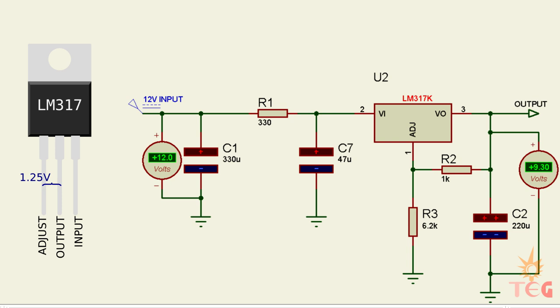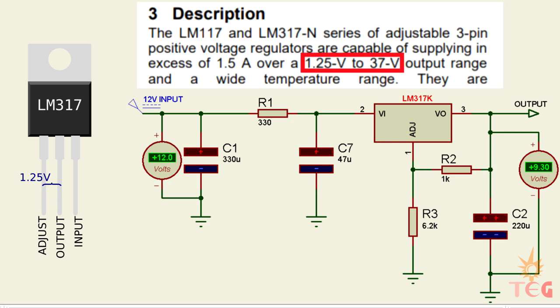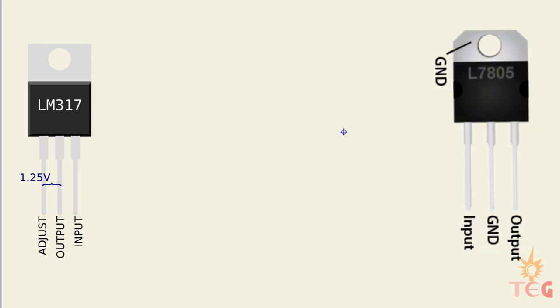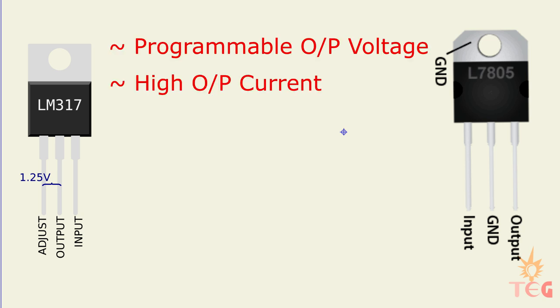LM317 voltage regulator is used here for this purpose. LM317 is capable of providing voltage between 1.5 volts to 37 volts. It is used here due to its several advantages over other voltage regulators, such as programmable output voltage, high output current, and better line and load regulation.